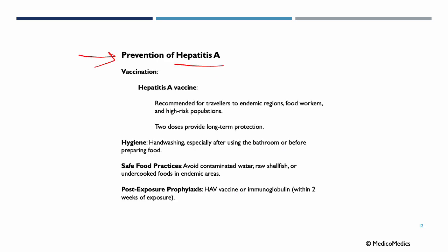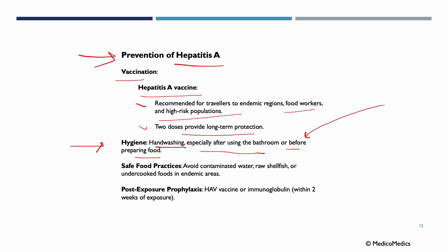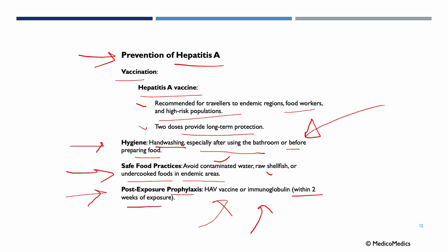Prevention of Hepatitis A includes: vaccination — the Hepatitis A vaccine is recommended for travelers to endemic regions, food workers, and high-risk populations, with two doses typically providing long-term protection. Hygiene — hand-washing especially after using the bathroom or before preparing food; these two activities should never be simultaneous. Safe food practices include avoiding contaminated water, raw shellfish, or undercooked food in endemic areas. Post-exposure prophylaxis involves taking the vaccine or immunoglobulins within two weeks of exposure.